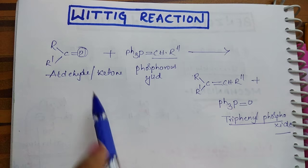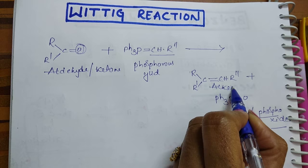See here, aldehydes or ketones react with phosphorus ylide. What we are getting, students? We are getting alkenes. Let us see the mechanism.